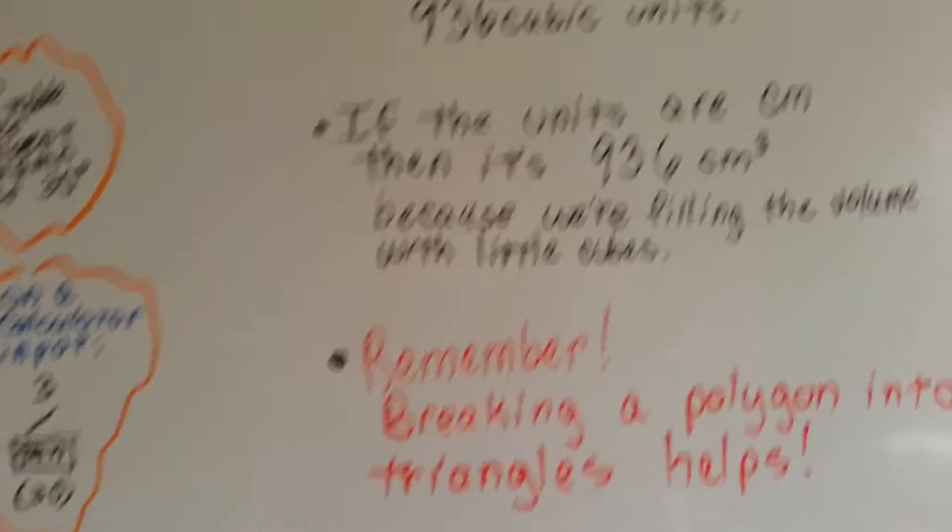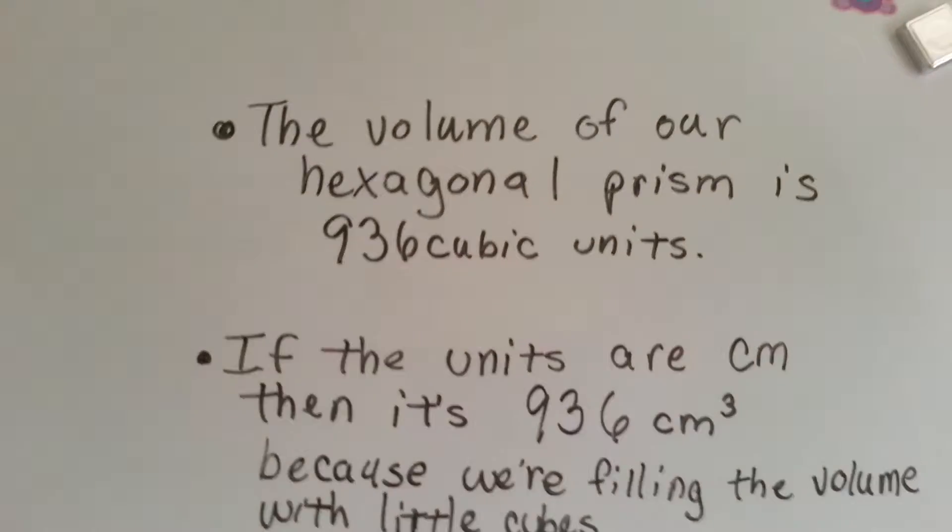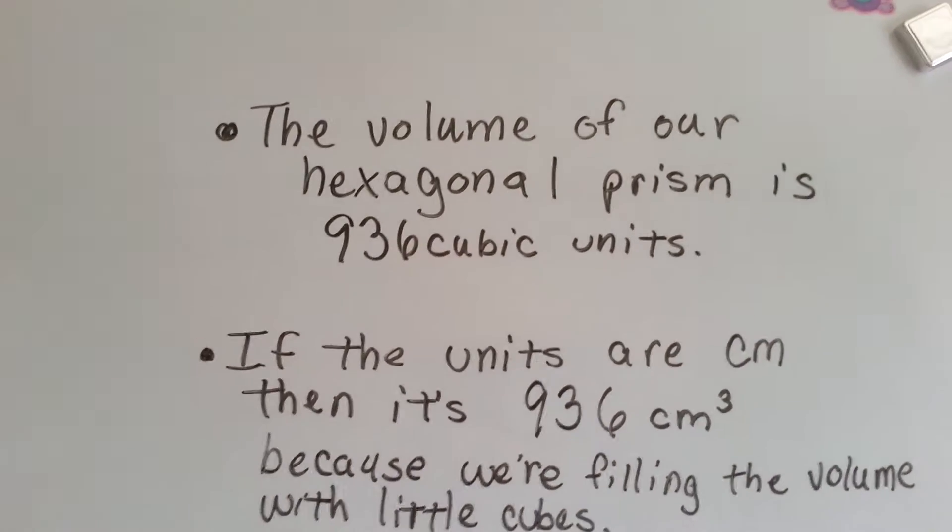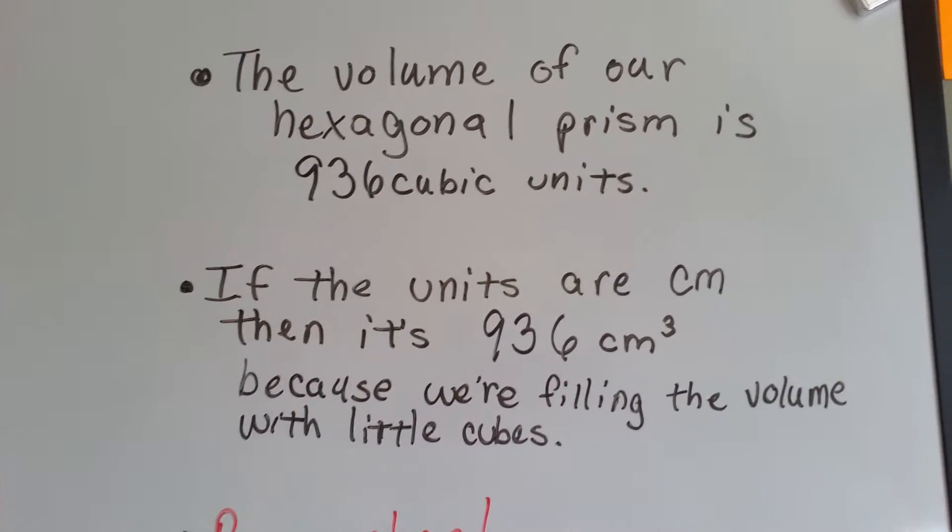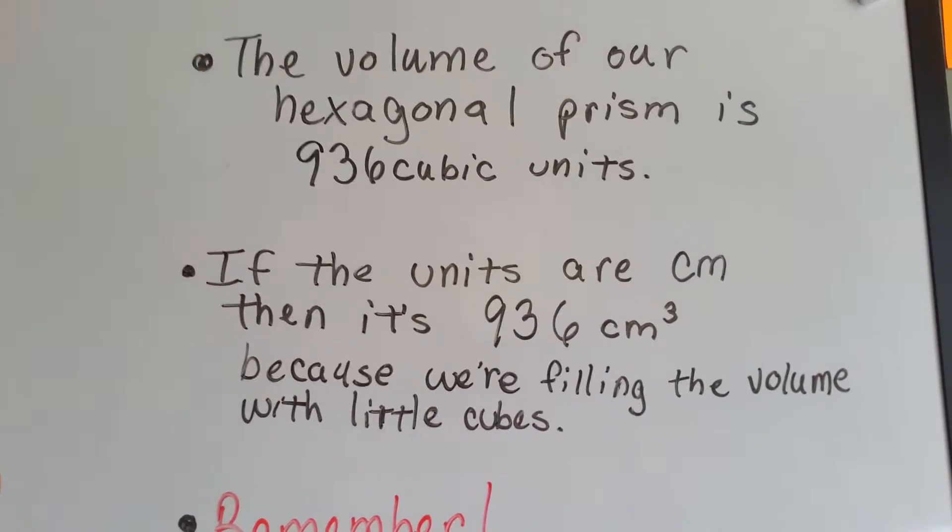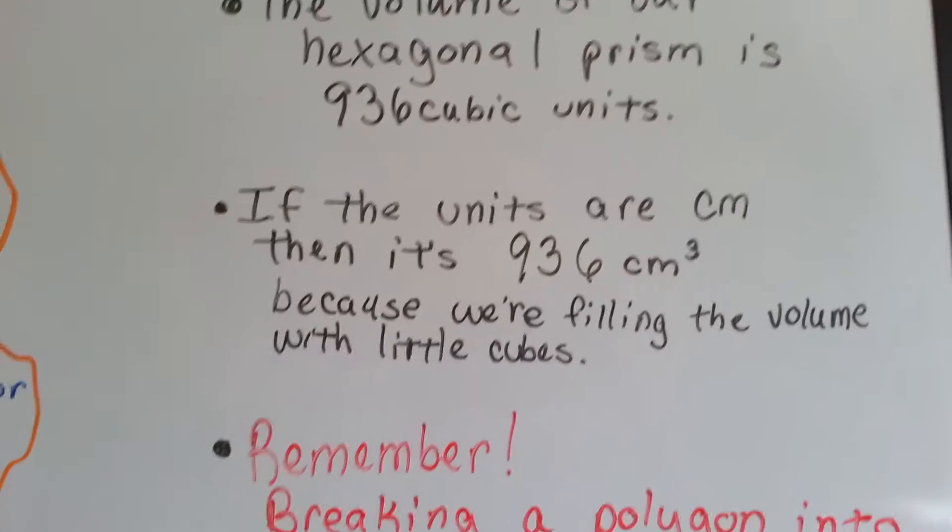The volume of our hexagonal prism is 936 cubic units. If the units are centimeters, then it's 936 cubic centimeters. Because remember, we're filling it with little cubes.